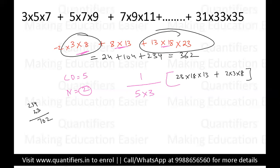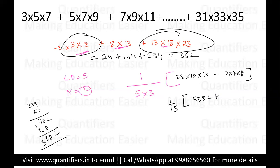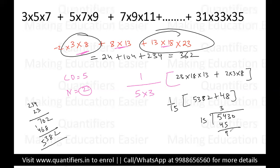Calculating: 18 × 13 = 234, and 23 × 234 gives 5382. Then 2 × 3 × 8 = 48, so 5382 + 48 = 5430. Dividing by 15: 5430 ÷ 15 = 362. Yes, 362 is the answer — which matches what we got manually. So this shortcut works perfectly. I hope all of you have understood this shortcut well. If you have any doubts, you can post them in the group. Thank you everyone.